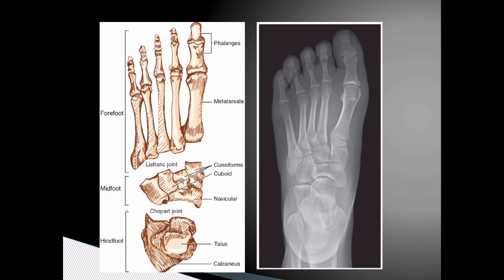Here we have an anterior to posterior view of the left foot. The foot is divided into the forefoot, midfoot, and hindfoot. The forefoot is made up of the metatarsal bones and the phalanges. The midfoot is made up of the navicular bone, the cuboid bone, and the three cuneiform bones. The hindfoot is made up of the talus and the calcaneus.